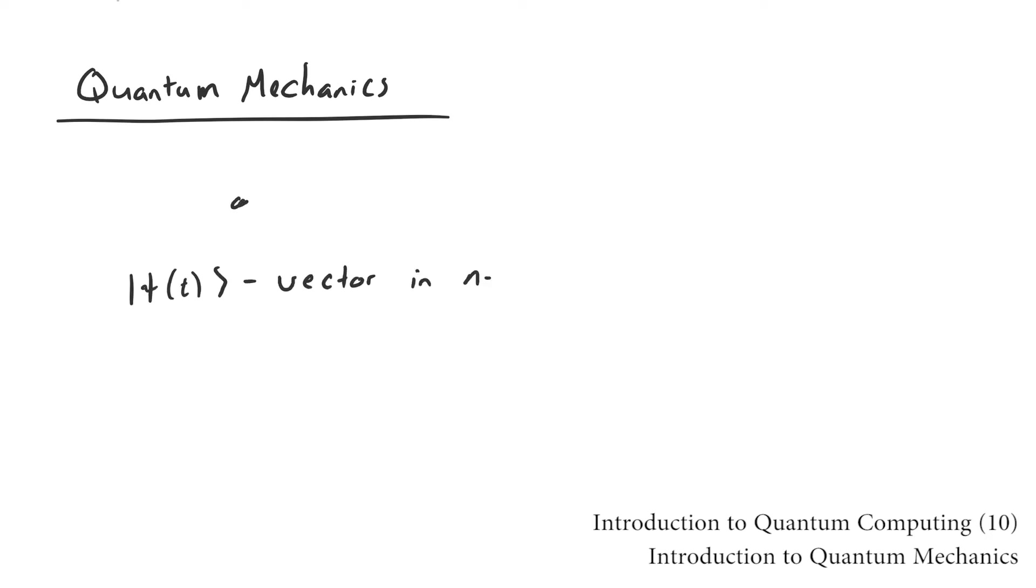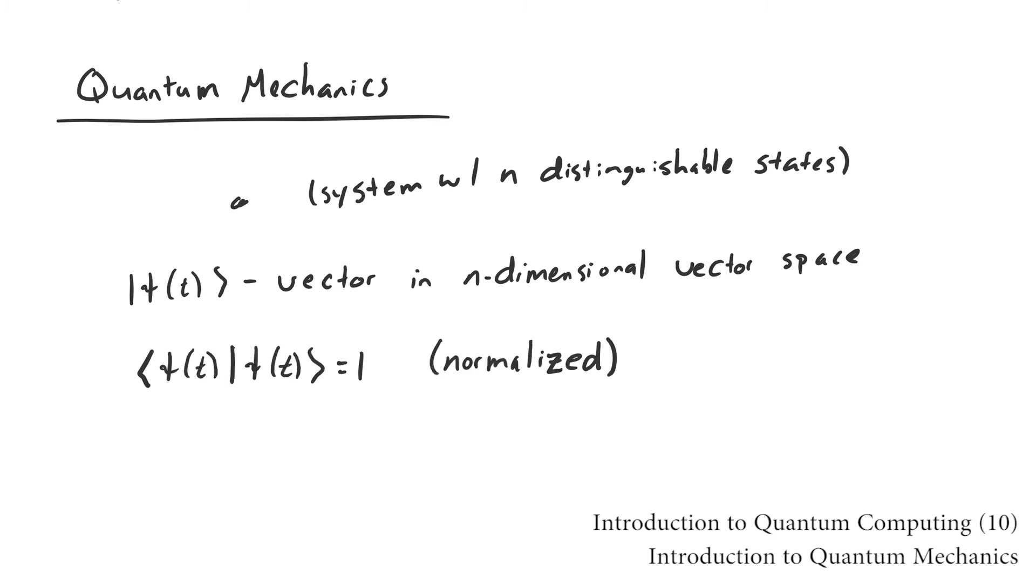Quantum mechanics is fundamentally different. It models physical systems as normalized vectors in an n-dimensional inner product space over the complex numbers, where n is the number of distinguishable states of the system. All other properties of the system are derivable from this state vector.